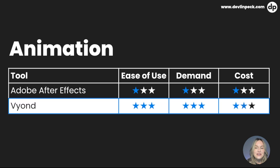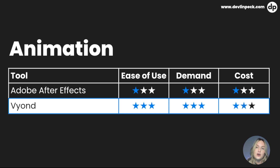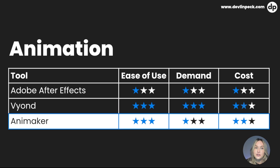The next animation tool is Vyond — we've talked about Vyond plenty on this channel. Vyond is very easy to use compared to other animation software and is very high in demand for the ID market. We're seeing it increasingly on lots of job descriptions, so it could definitely be worth learning if you're into animation. As far as cost goes, it is definitely not free and can get really expensive, but there are monthly subscription tiers that can be affordable. Animaker is very similar to Vyond — just as easy to use, but the demand is much lower and it's actually a little bit cheaper.